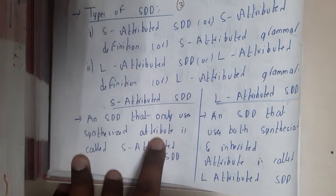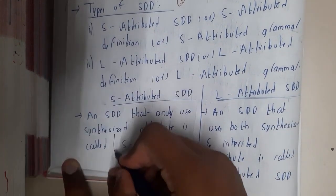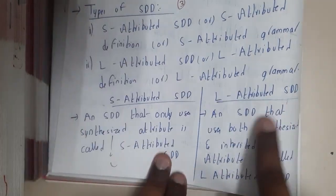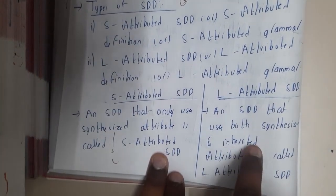only synthesized attributes. If you recall, synthesized attributes are the children attributes, so it completely depends on children. Similarly, L-attributed depends both on synthesized and inherited, so it is a combination.